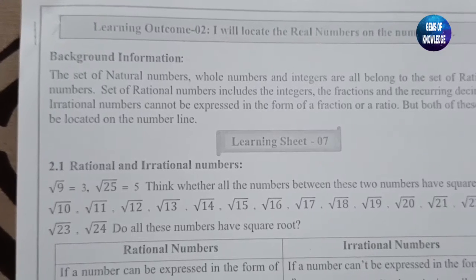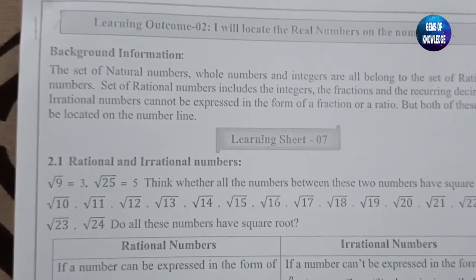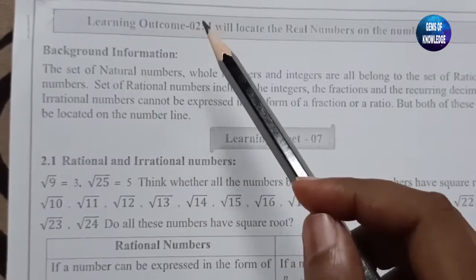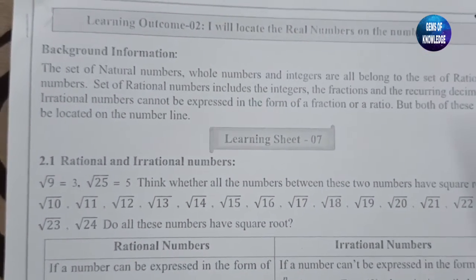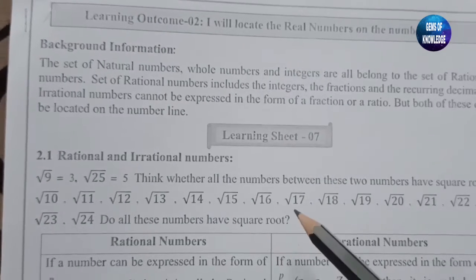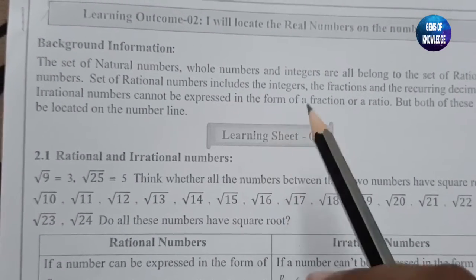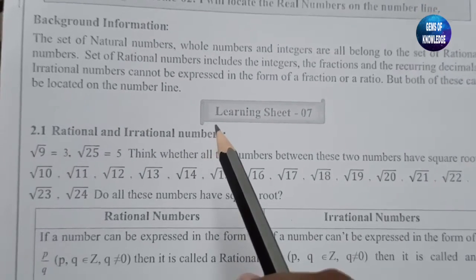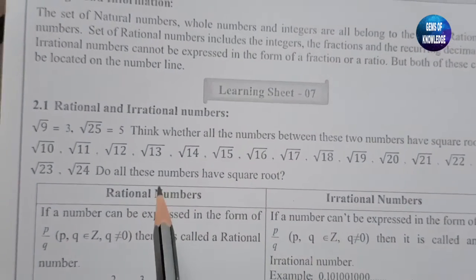Hello everyone, welcome back to my channel Gems of Knowledge. Today I have come up with a new video on Learning Outcome 2 — locating real numbers on the number line. We have studied up to Learning Sheet 6, and today we are going to learn about Learning Sheet 7, which is rational and irrational numbers. Here you can see they have given the definition of both.